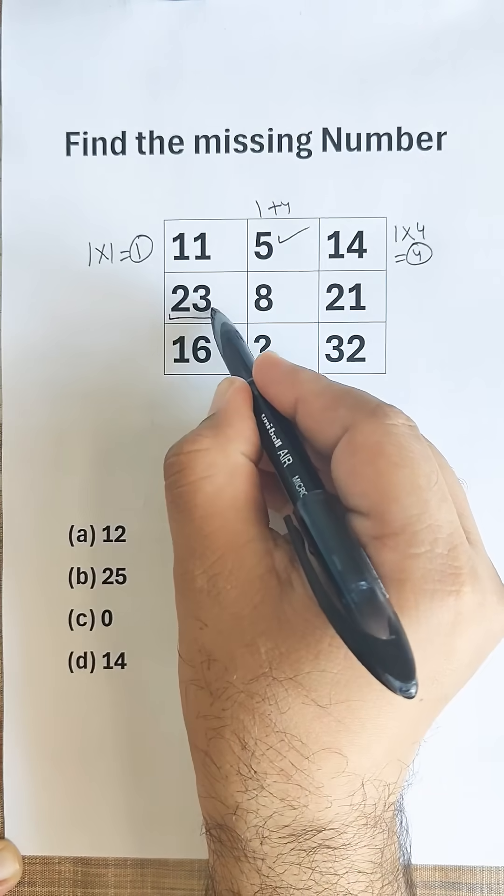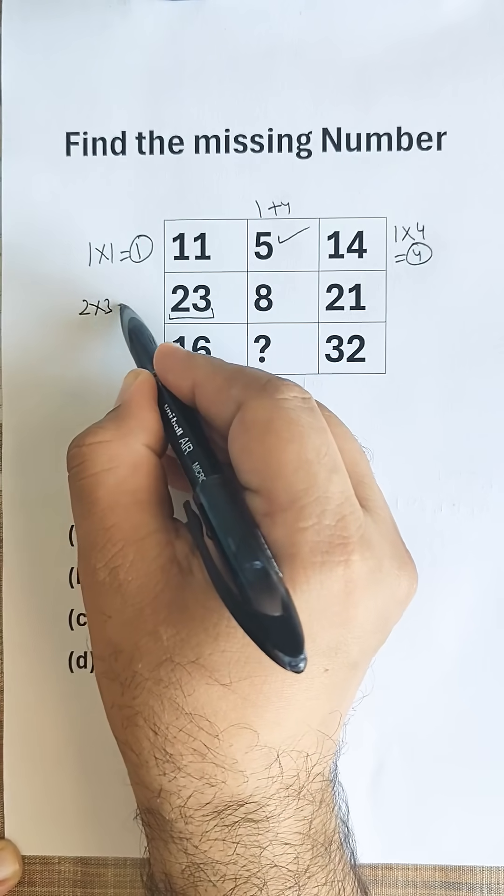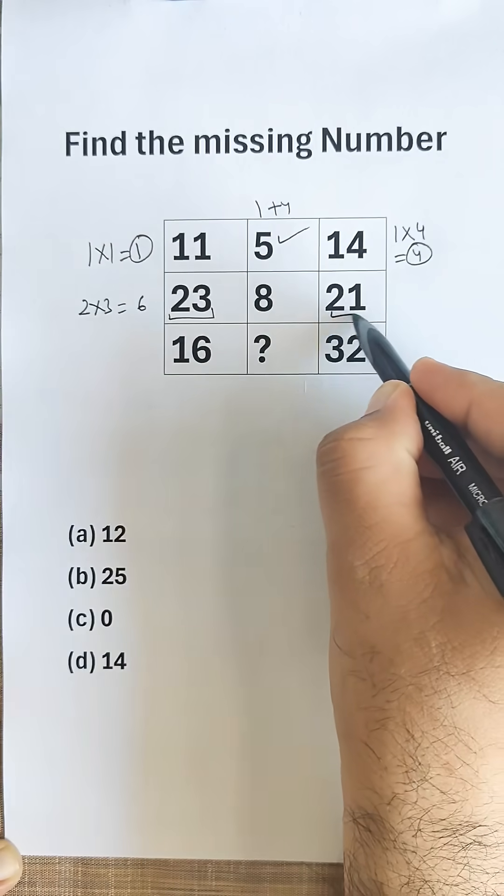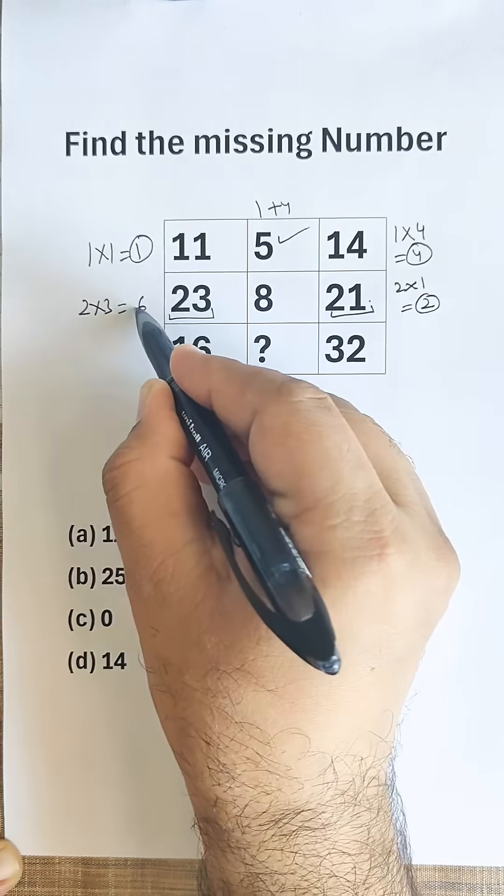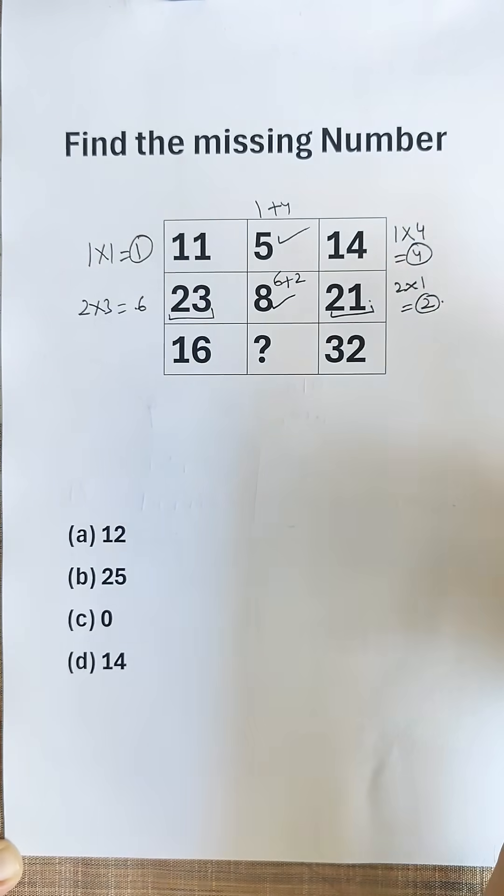Similarly, we will try with row 2. The product of digits 2 into 3 is 6. Product of digits 2 into 1 is 2. If we add 6 and 2, we get 8.